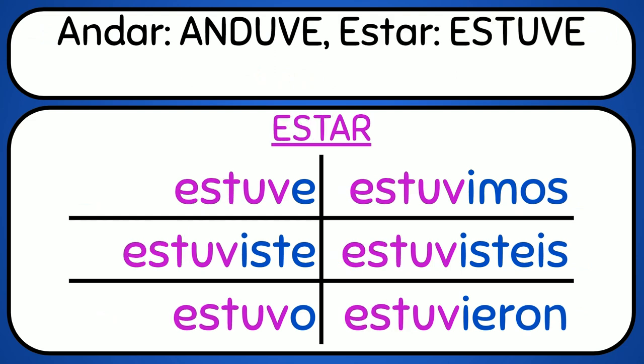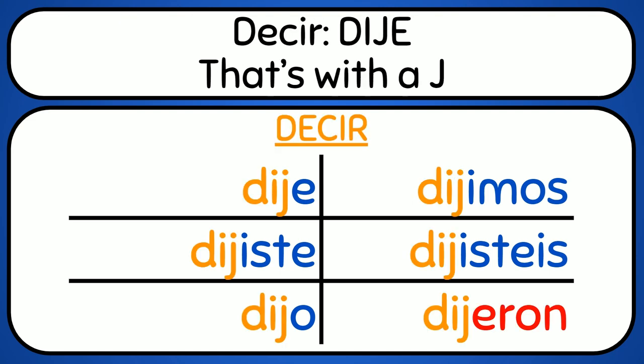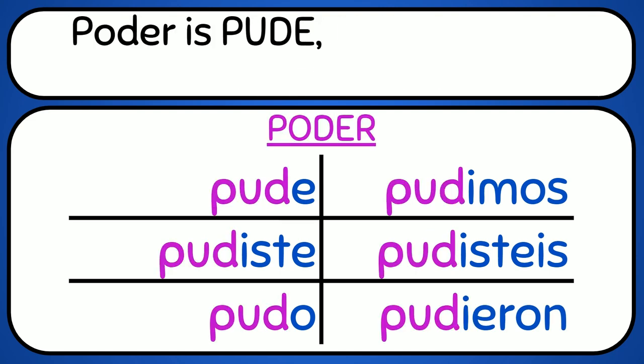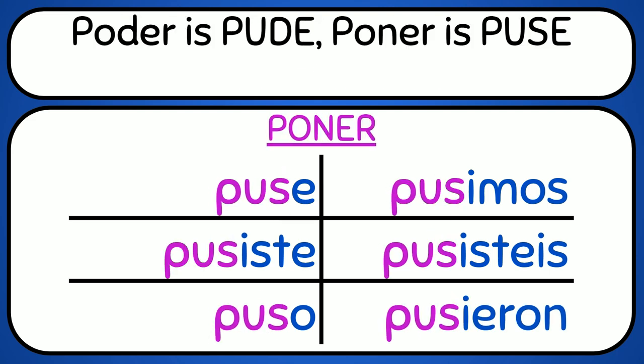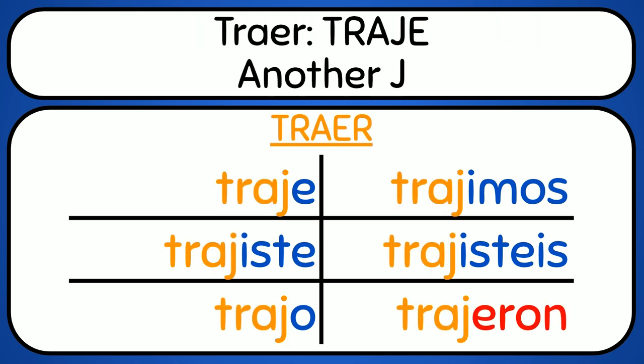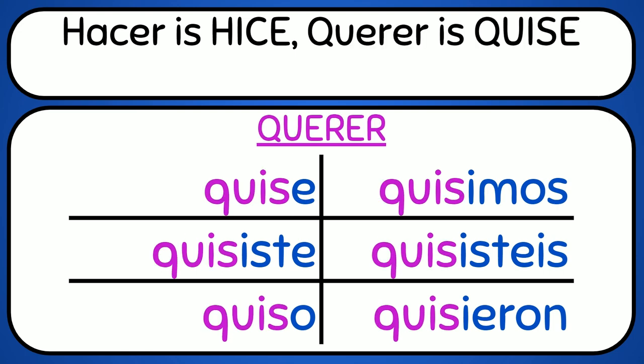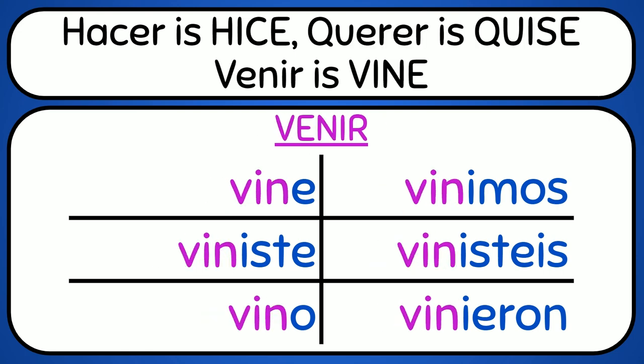Andar: anduve, estar: estuve, tener: tuve, decir: dije (that's with j). Poder: pude, poner: puse, saber: supe, traer: traje (another j). Hacer: hice, querer: quise, venir: vine, caber: cupe.